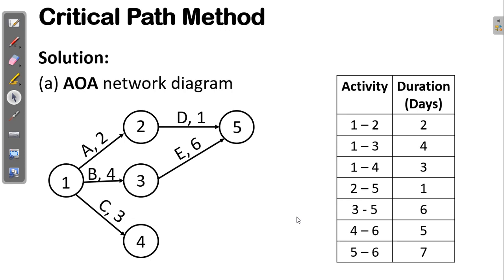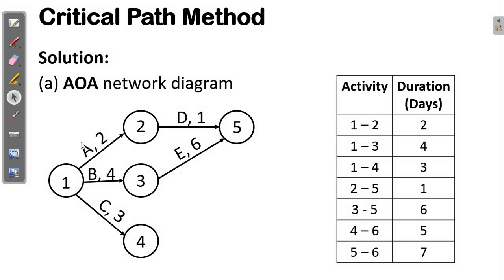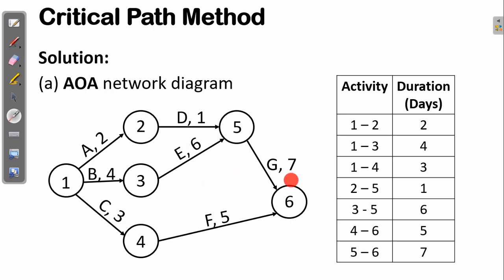We construct the network for activities 2-to-5 and 3-to-5 with their respective labels and times. After these two activities, we have the last two activities: 4-to-6 and 5-to-6. These two also have a common endpoint. Activity 4-to-6 emerges from node 4 and activity 5-to-6 from node 5, and they share their common end node 6. This is the final network for activity on arc, or activity on arrow, with their respective labels.